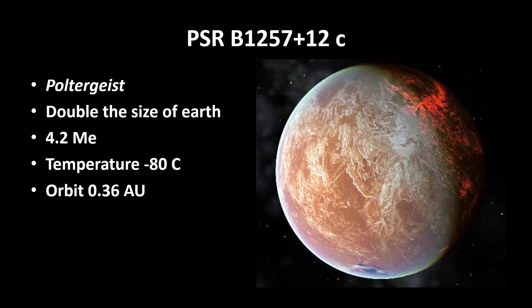The second planet out, planet C, is being given the name Poltergeist - I love that. It's double the radius of the earth, so it encompasses eight times the volume but only has 4.2 times the mass. Again, relatively under-dense, suggesting it's not made of a metal core, and being further away from the source of energy, chilly minus 80.